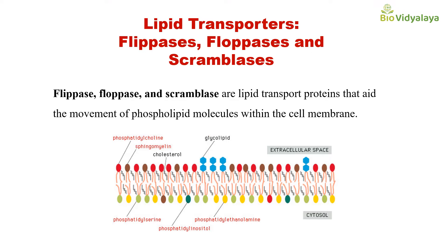So what is the need of transporting lipids from one monolayer to another monolayer? We all know that cell membranes are composed of bilayers of lipid — that means two layers of lipids: an outer layer and an inner layer. The distribution of lipids in these two layers is not equal. In the cytosolic side, that means in the inner leaflet, phosphatidylserine, phosphatidylinositol, and phosphatidylethanolamine are more. But in the outer membrane, phosphatidylcholine and sphingomyelin are more. So the distribution of lipids is asymmetrical.